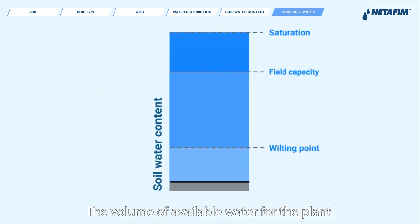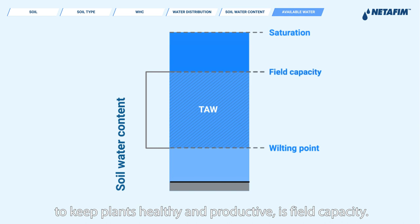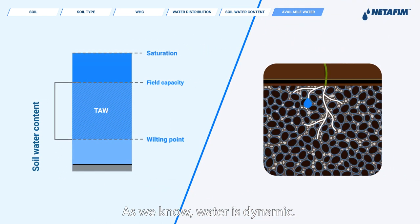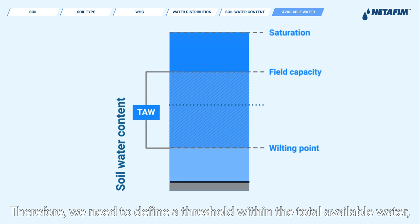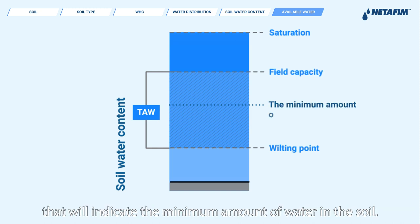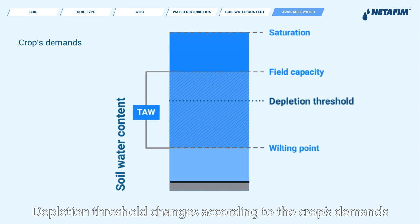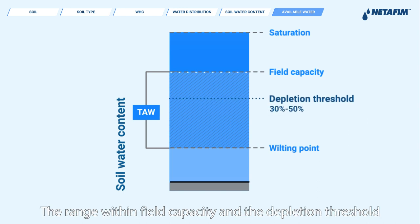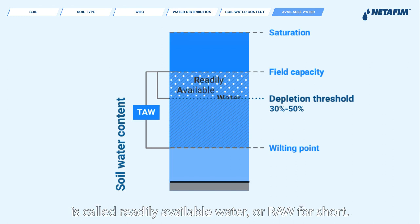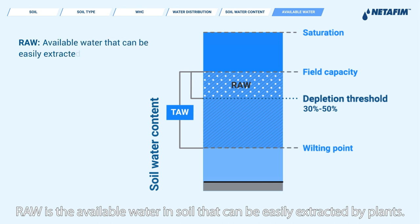The volume of available water for the plant is between field capacity and wilting point. This range is defined as total available water, or TAW for short. The optimal soil water content to keep plants healthy and productive is field capacity. Since water is dynamic, we need to keep it around field capacity to avoid the wilting point. We therefore define a threshold within the total available water indicating the minimum amount of water in the soil — this is called the depletion threshold. The range within field capacity and the depletion threshold is called readily available water, or RAW — the available water in soil that can be easily extracted by plants.